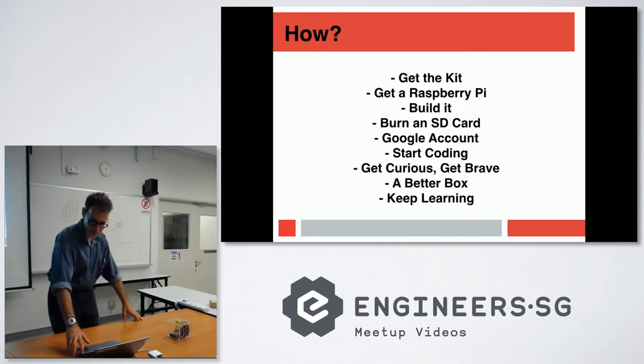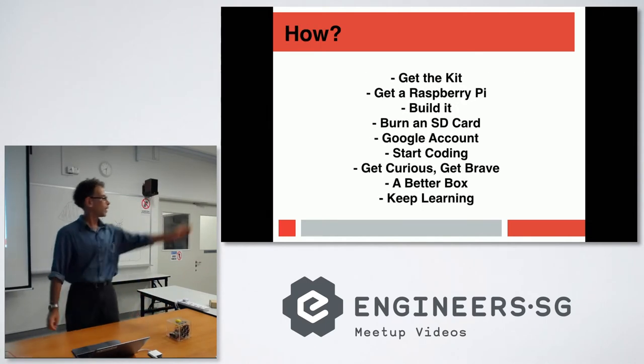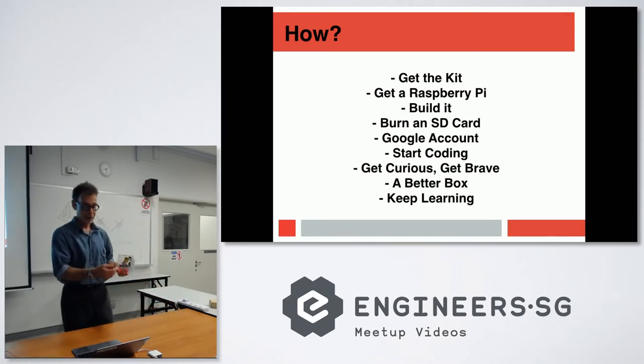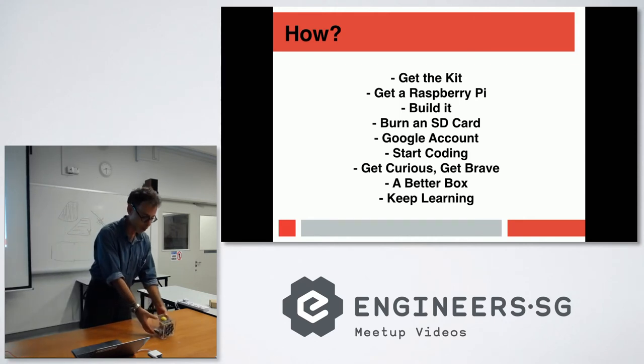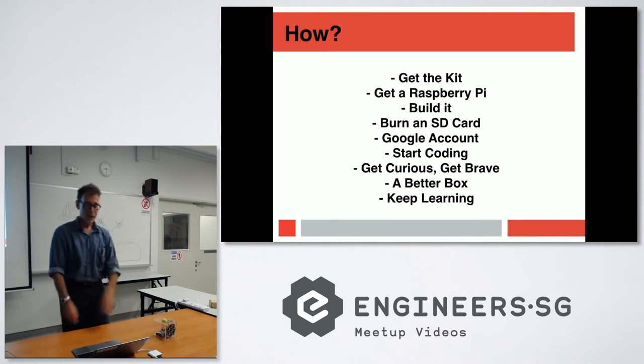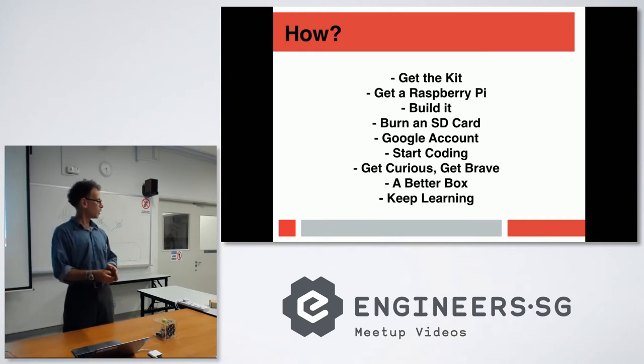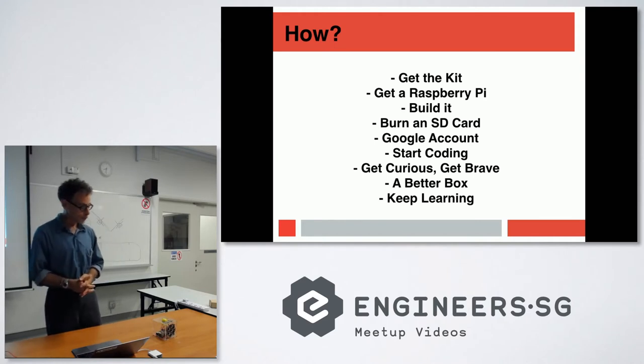How to do it: get the kit, get a Raspberry Pi, build it, burn an SD card with the Raspbian operating system, set up your Google account and cloud engine APIs, and start coding. It's all written in Python.